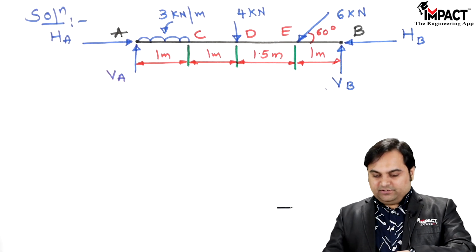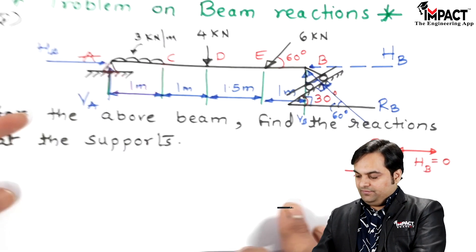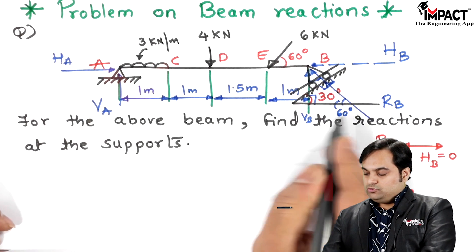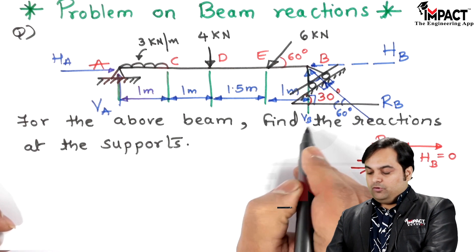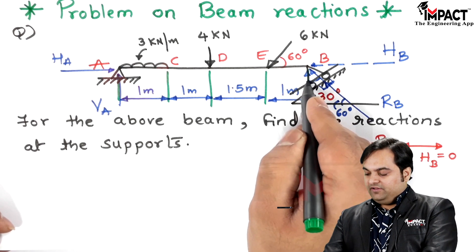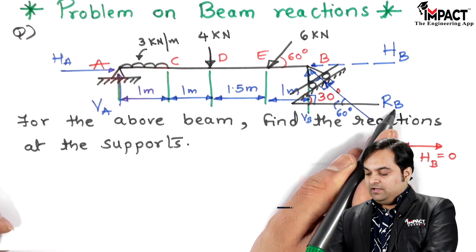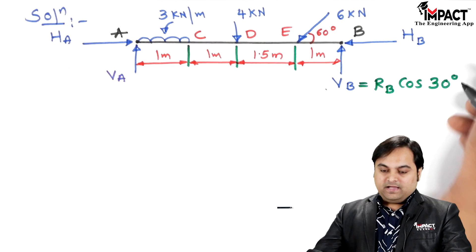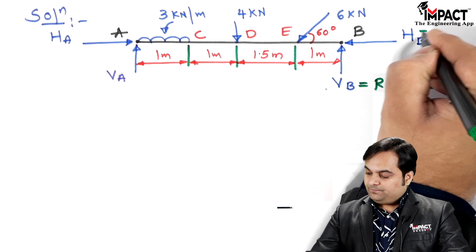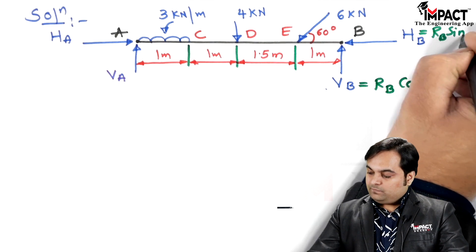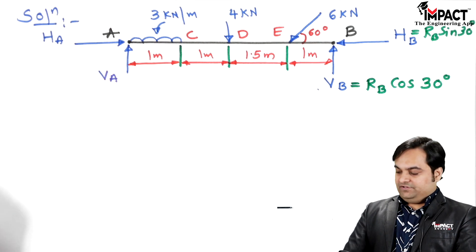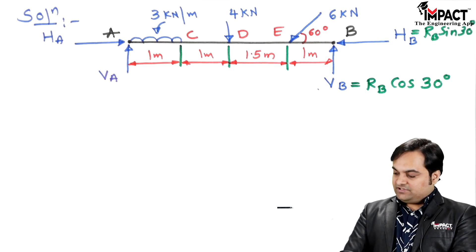Since RB is inclined at 30 degrees with respect to the vertical, the vertical component VB equals RB cos30, and the horizontal component HB equals RB sin30. HA and VA remain as unknowns. We now apply the equilibrium conditions to find these reactions.